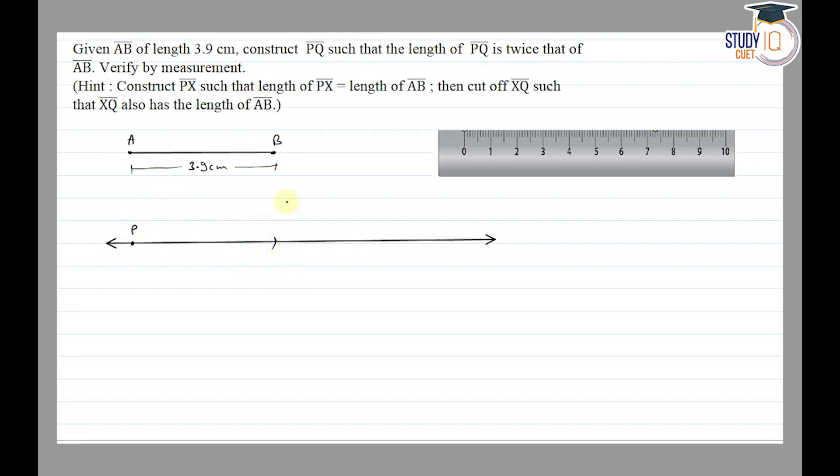So point X is marked, because we need to draw PQ twice of AB. So PX is equal to AB. Then again, place the compass pointer at X, fix it, and cut one more arc. Now we have point Q.